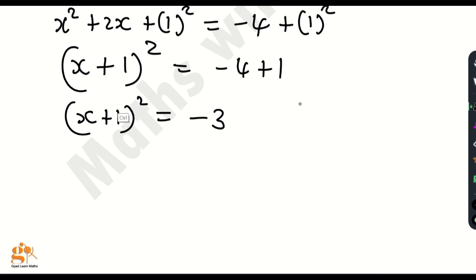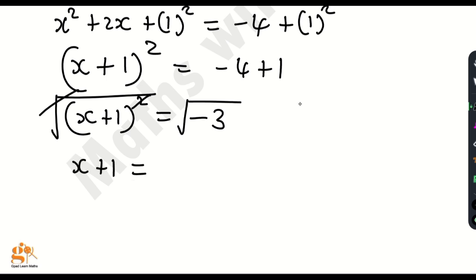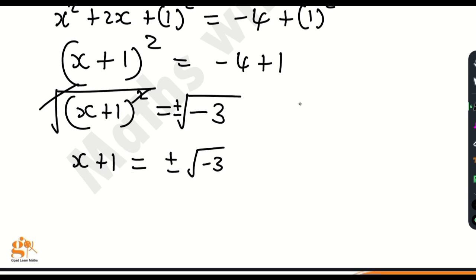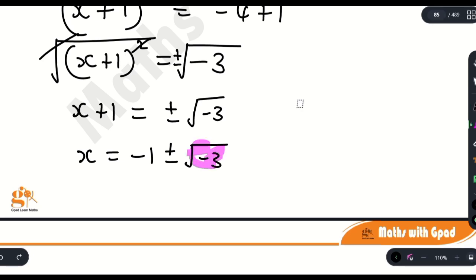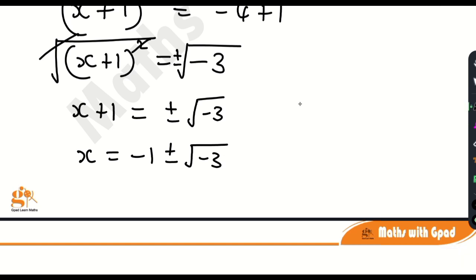I'm now going to square root both sides to get rid of the square. The square root cancels the square, giving x plus 1 equals plus or minus the square root of negative 3. Moving plus 1 to the right hand side, x equals negative 1 plus or minus the square root of negative 3. This is an imaginary number because we have a negative number inside a radical.